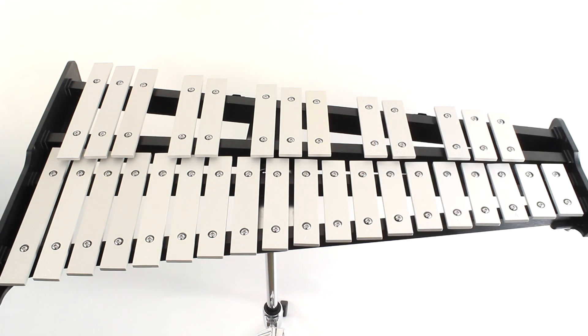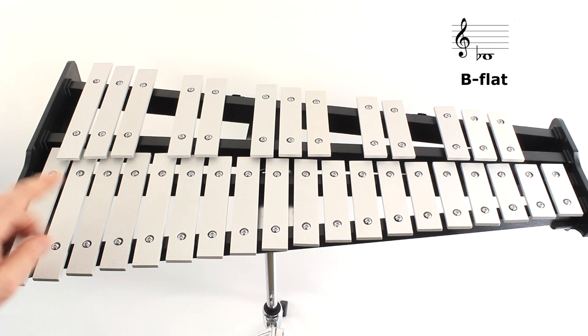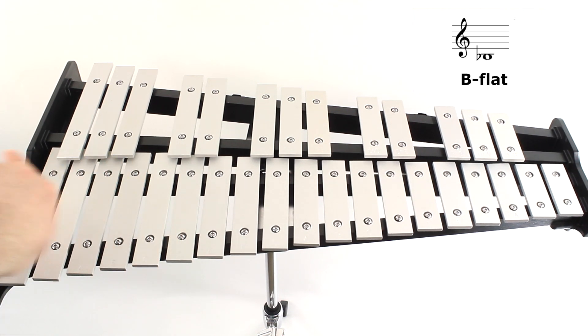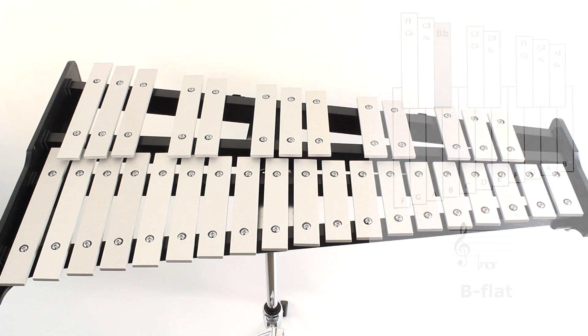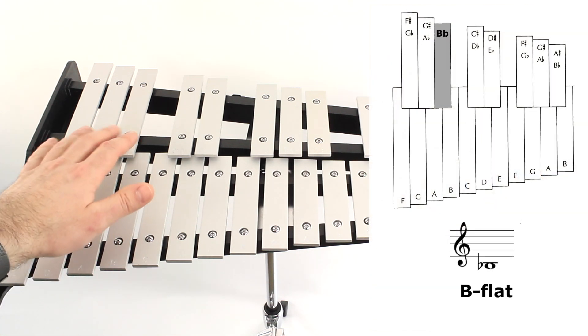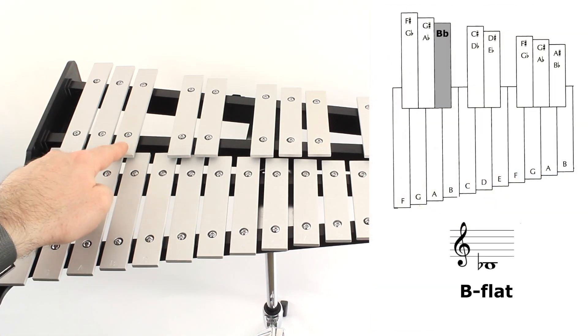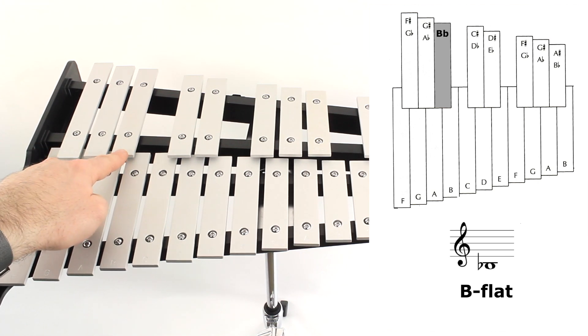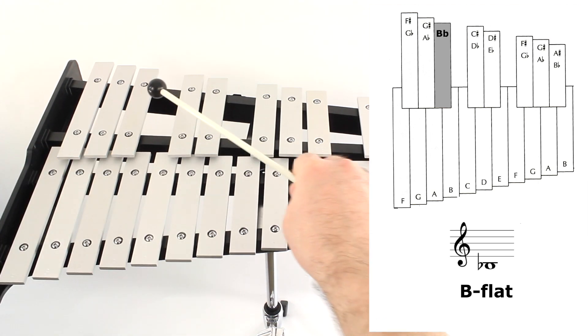Now let's find the note B flat. B flat is written below one ledger line on the music staff, so it's actually lower than a C. So we're going to be going in this direction. Lower is to the left. We can see from our note chart that B flat is in the upper row of keys, our flat and sharp notes, and it's right here, the top note of this group of three here at the bottom. Let's play B flat with our right mallet.